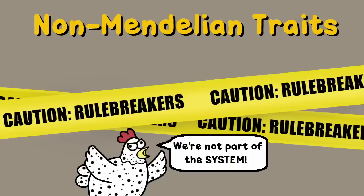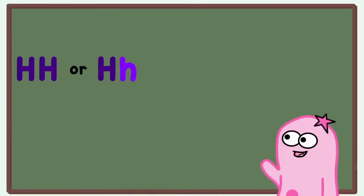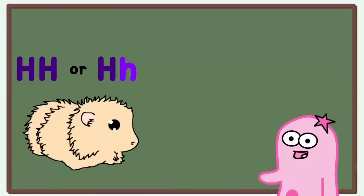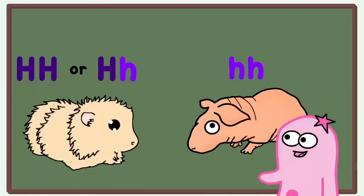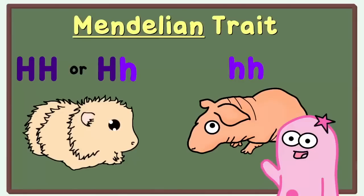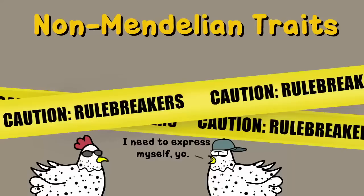They don't follow the regular Mendelian rule that having a dominant allele means the dominant trait will show. Remember in our guinea pig video, having a dominant allele represented by a capital H meant that the guinea pig would have hair? Only if there was no dominant present — a genotype of little h, little h — would there be a hairless guinea pig. Well, that's a Mendelian trait. What we're going to cover now is when these traits are non-Mendelian and they don't follow these basic rules.